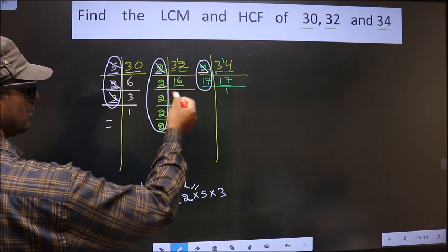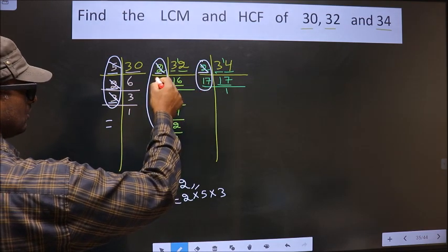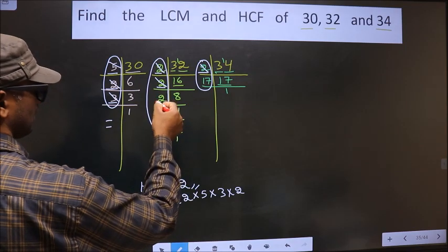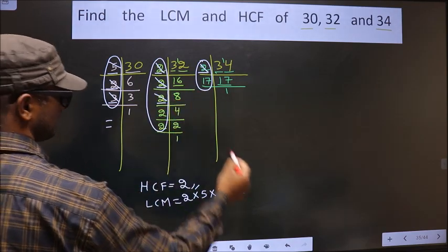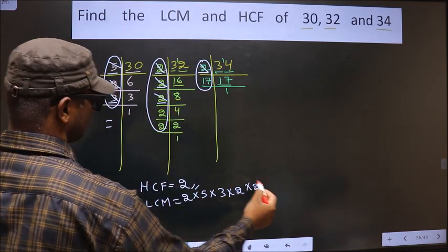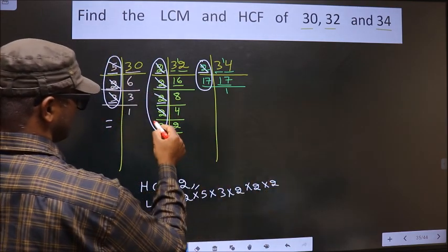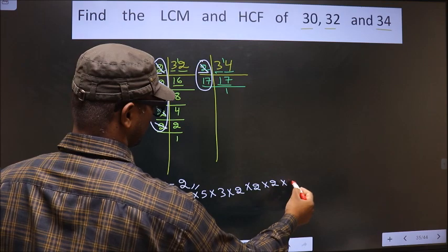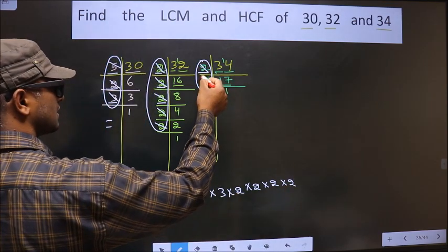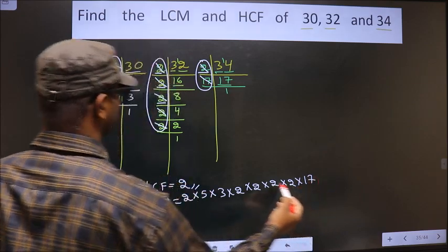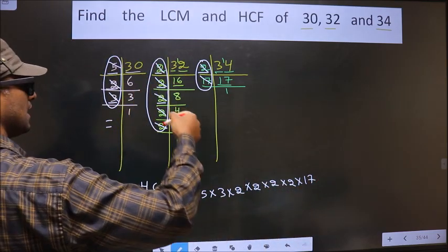Now here 2 is not cut. Do we have 2 here? No. So cut 2 right here. Now again 2 not here. So cut 2 right here. Now this 2 also cut right here. Now here 17 is not cut. So cut and right here. So now each number has been cut.